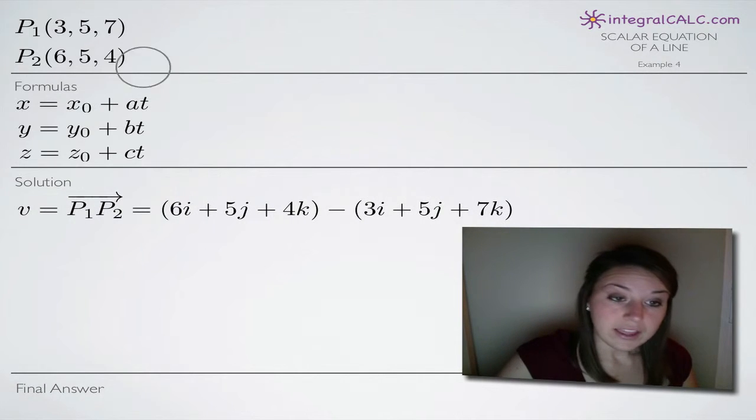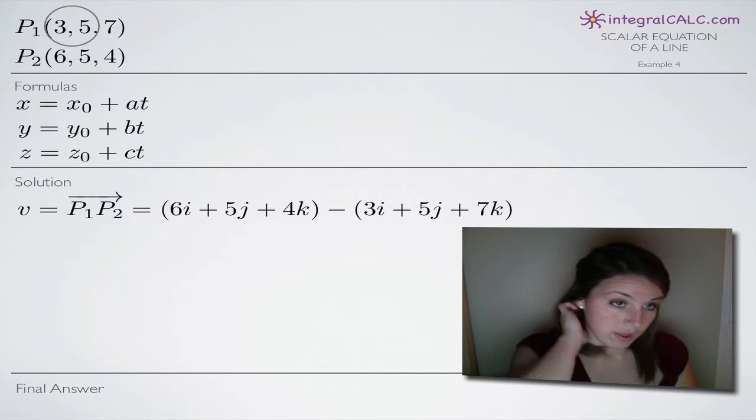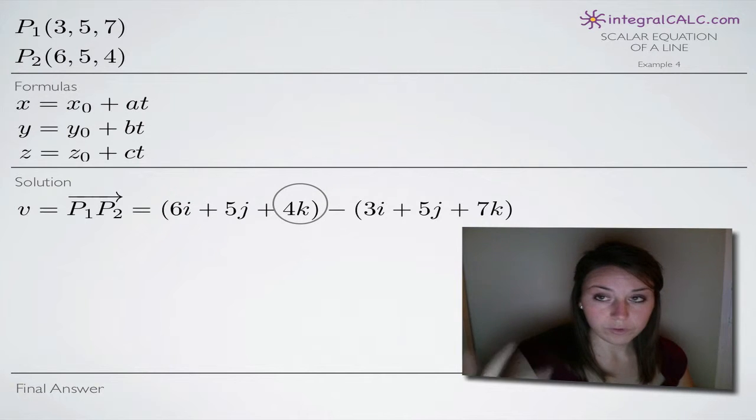So the way that we do that is we subtract the coordinates of p₁ from the coordinates of p₂. And what I mean is, we've been given coordinates here in the form x, y, z. Well, those correspond to i, j, and k respectively,